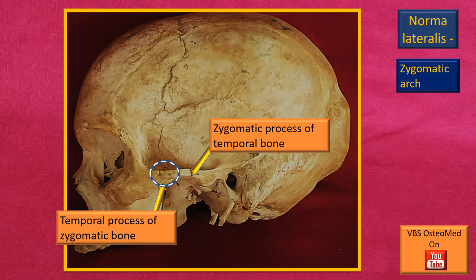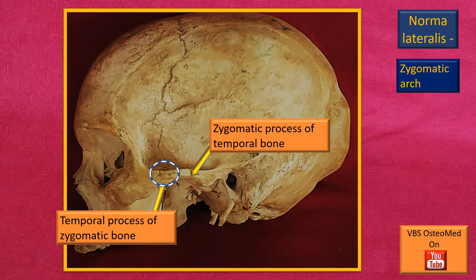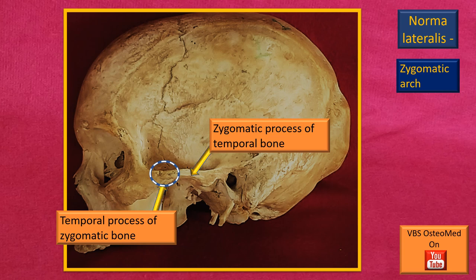This zygomatic arch has two components. One is the anterior component, which is the temporal process of the zygomatic bone, shown by the lower flashing arrow, and the upper flashing arrow indicates the zygomatic process of the temporal bone. These two bones each give a process, they meet together, and the encircled area is the suture formed between them — namely the zygomaticotemporal suture.